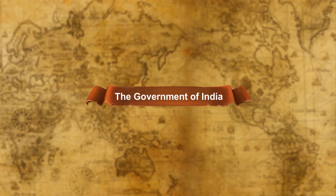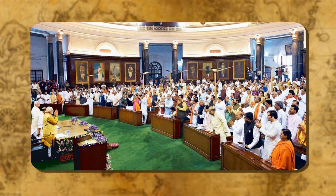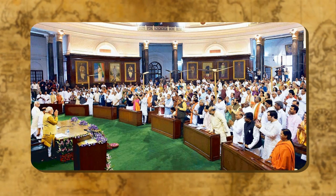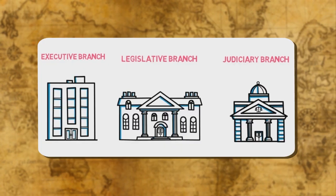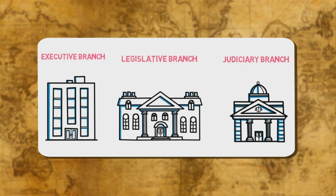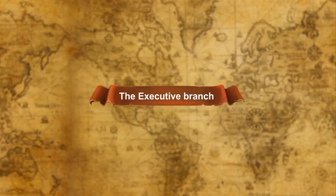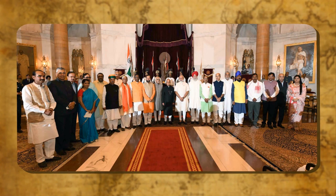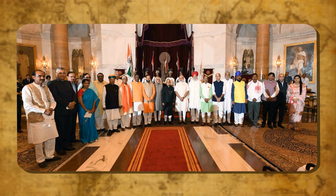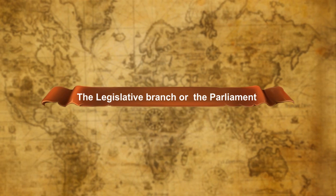India has a parliamentary system of government based largely on the United Kingdom Westminster system. The government comprises three branches: the executive, the legislative, and the judiciary. The executive branch is headed by the president, who is the head of the state and exercises his or her powers on the advice of the Council of Ministers directly or through officials working in various offices of the government.